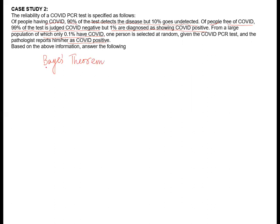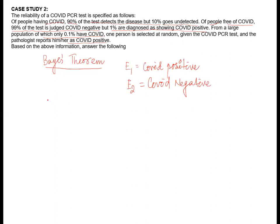I am not writing the whole formula here. There are two subsets. One is E1, which is the set of people having COVID positive. E2 is COVID negative. And they make the whole sample space. A is the event of being tested positive — reported positive.